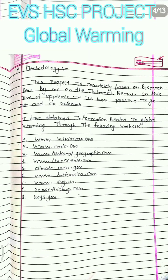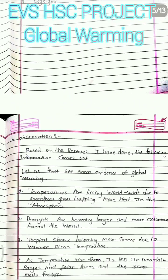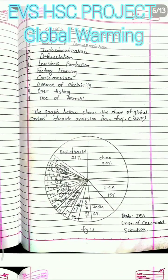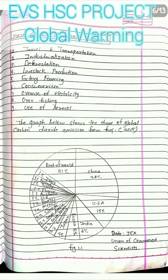Then the methodology which we have used to do this project — from where we have gathered the information. After that we need to write about the observations, and what are the causes of global warming.